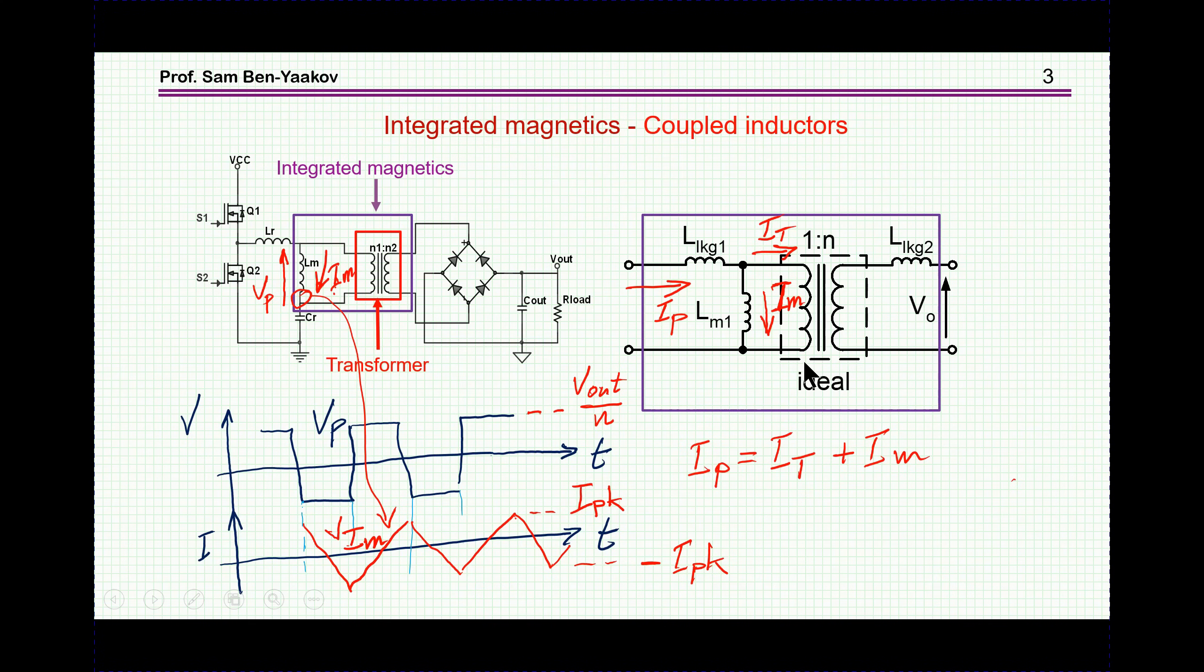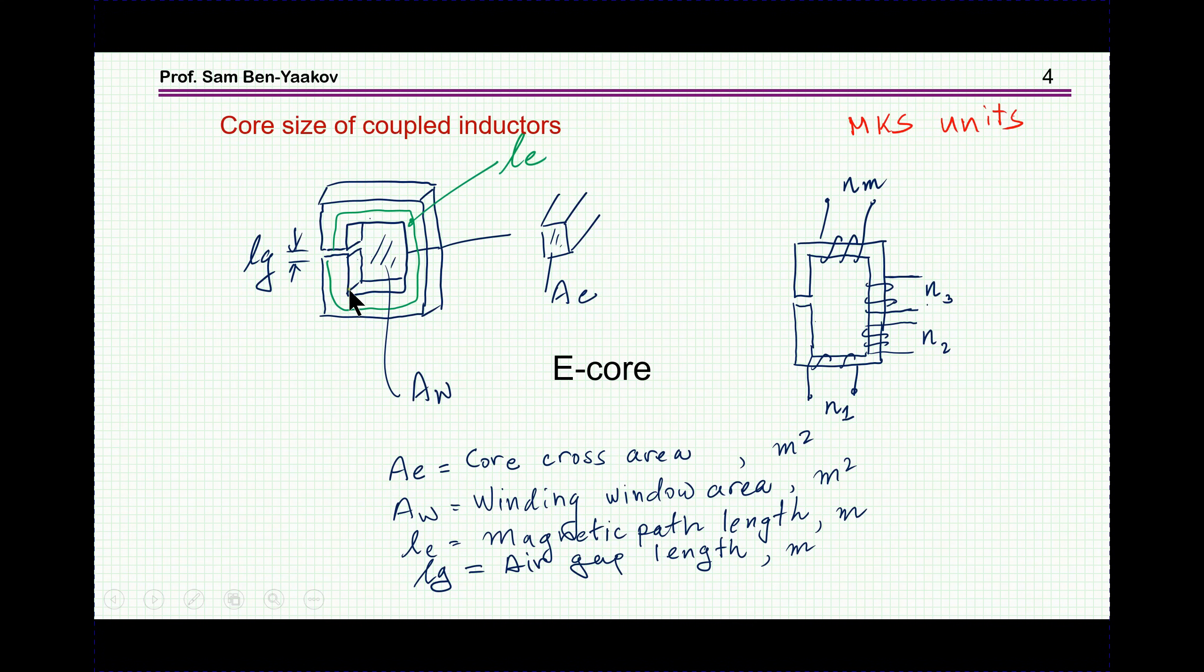This is not a transformer anymore because the transformer is transparent to the power. All the power coming in is coming out, except for some power circulating for the magnetization. But in the case of a coupled inductor, we store energy. So we need an inductor that will store energy. This would necessitate putting a gap in the core or using a distributed gapped core.